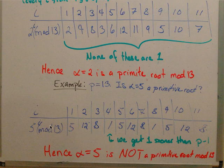So 5 to the i, 5 to the 1, 5 to the 2. And we can see that we get 5, 12, 8, 1. You can see how we have this reoccurring pattern where we keep getting a 1 before p minus 1.